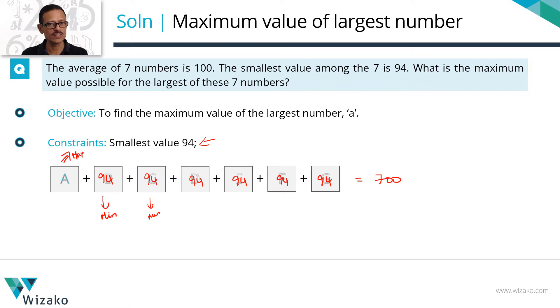The crux of solving this question is realizing that the question did not mention these numbers to be distinct. So each of these numbers can take the minimum least possible value and when they take such a value is when A will get maximized.